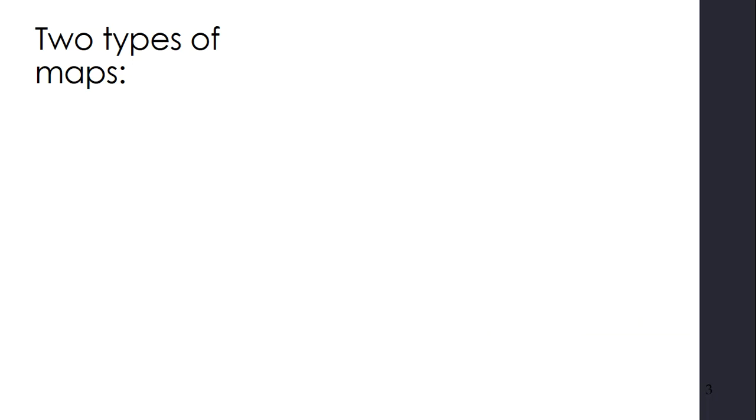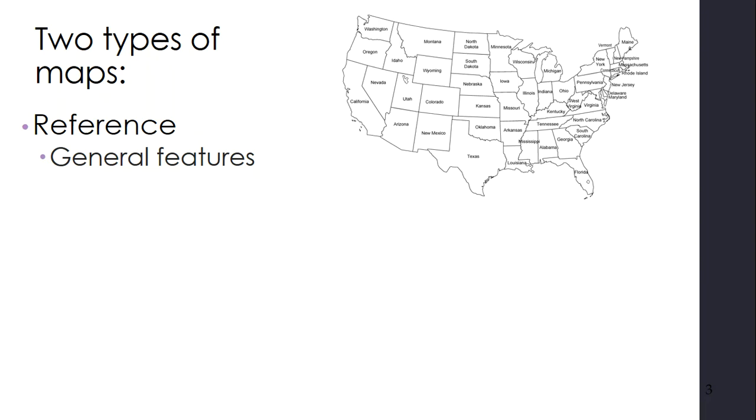But first, let's talk about the fact that there are two types of maps. The first is a reference map. A reference map shows general features. So if you go on your smartphone and look at a map of San Diego, that's a reference map. It's showing us exactly where things are. So here is a reference map of the United States that's showing us the 48 continental United States or contiguous United States.